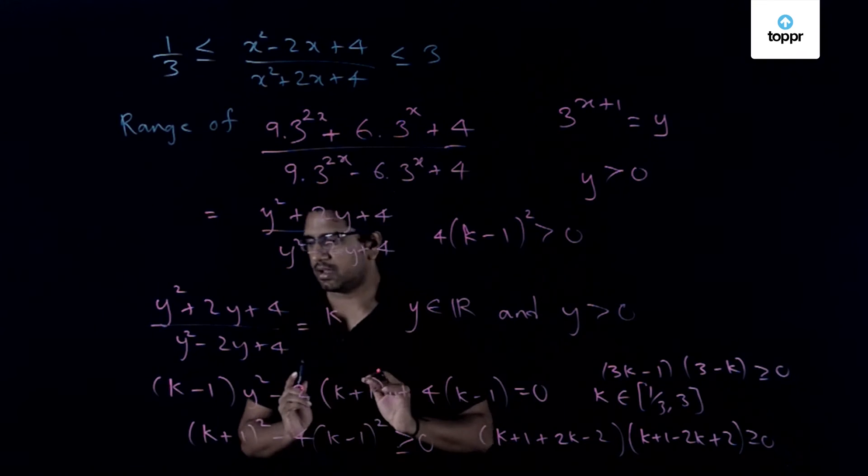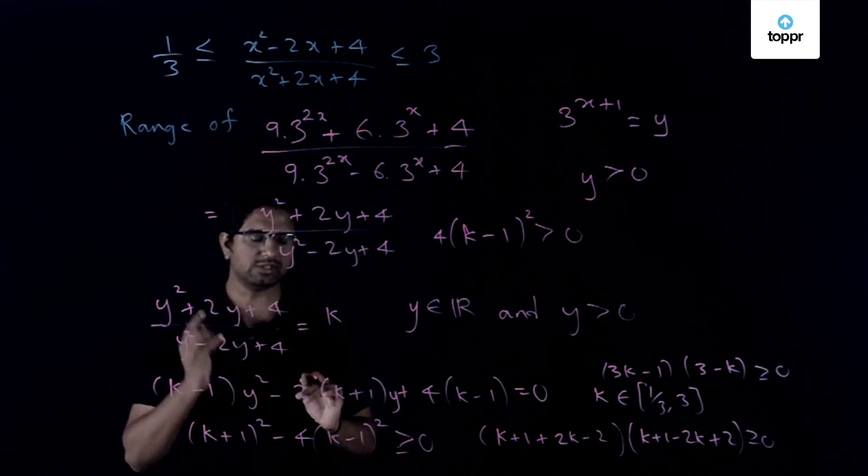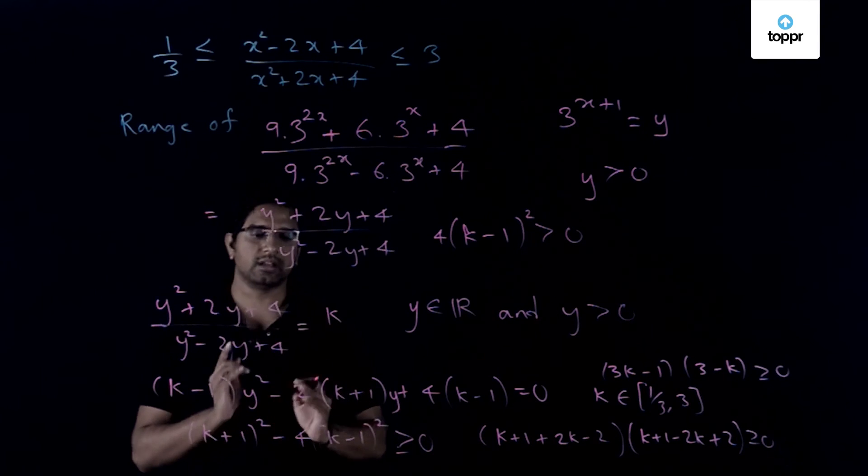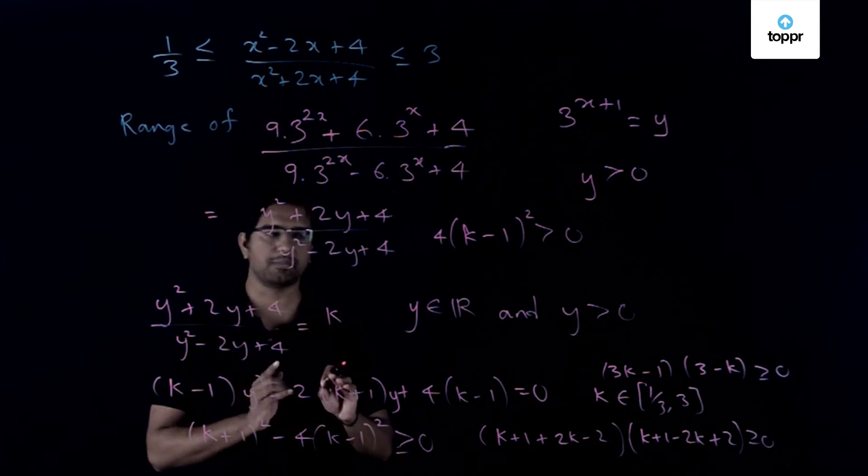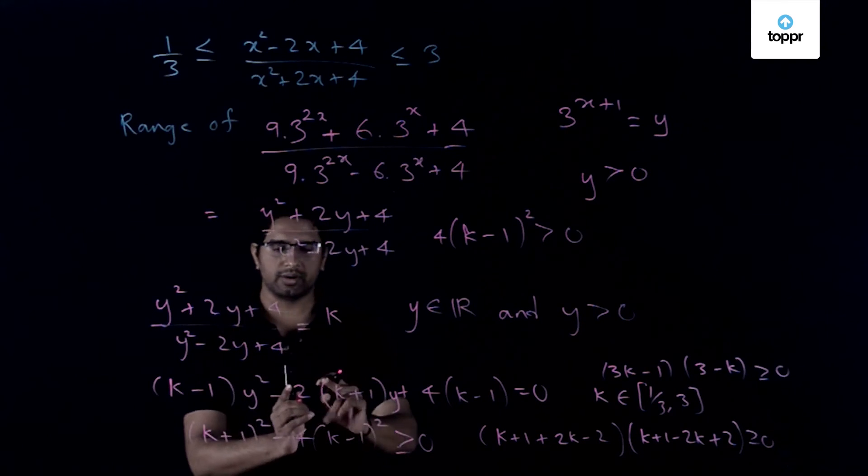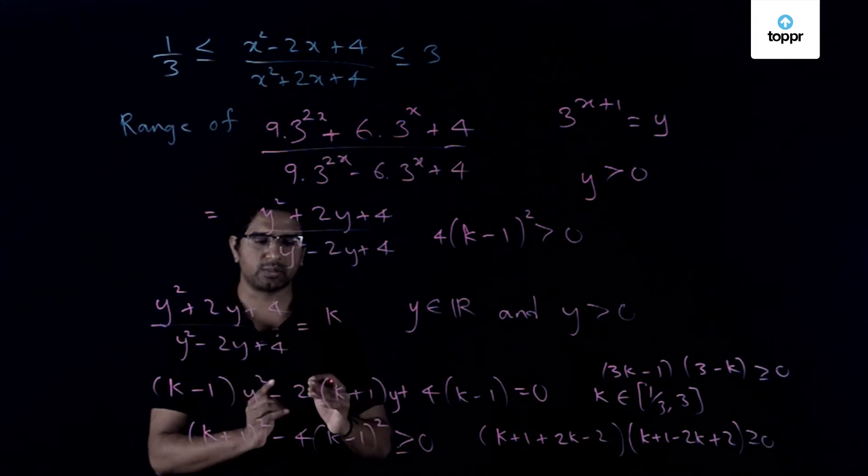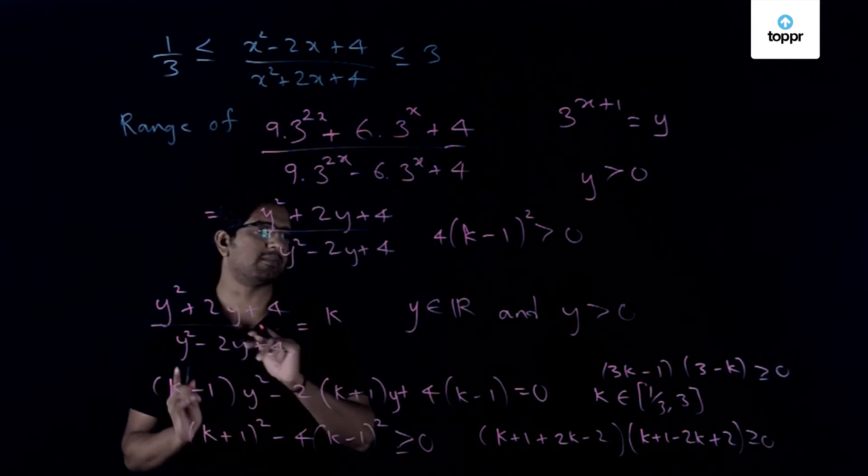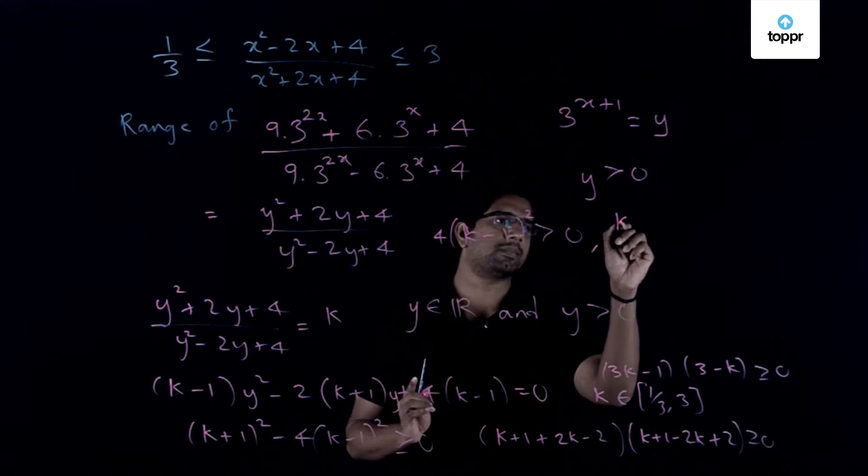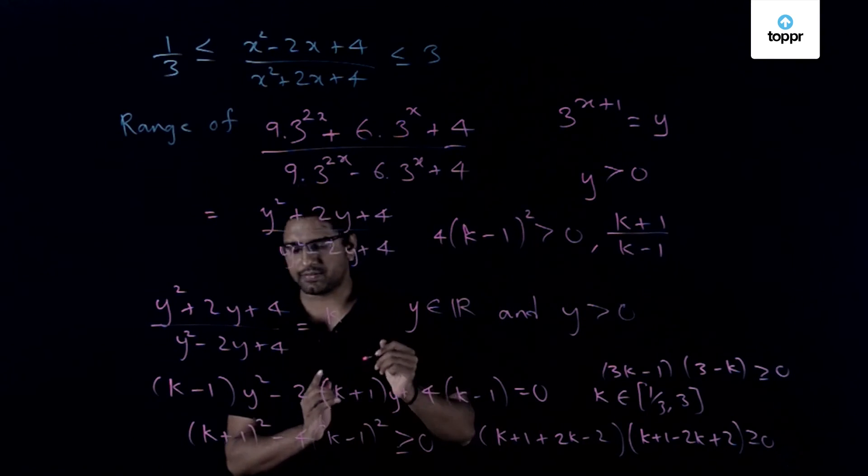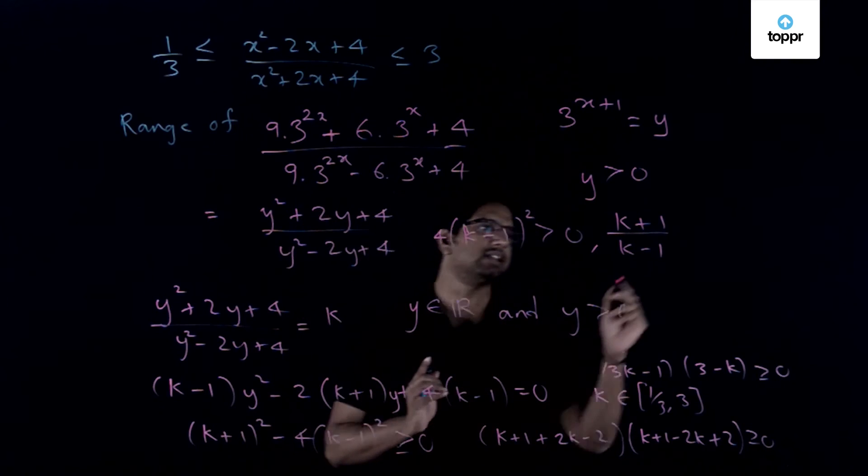And the other condition which needs to be satisfied is that the average of the roots should be greater than 0. So that is the most important thing here. So the average of the roots we know by the sum of the roots formula it is equal to (k + 1) divided by (k - 1). So we have (k + 1) divided by (k - 1). So the average of the roots should be greater than 0.